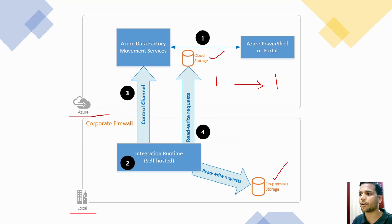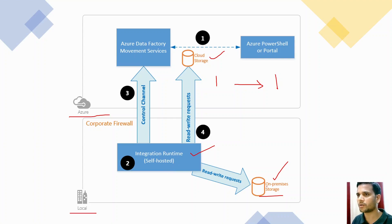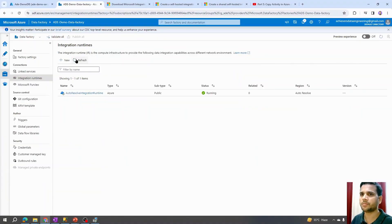However, when copying data from an on-prem solution and pushing it to the cloud, we need to understand the security and take care of data encryption when transferring data from on-prem over the internet to Azure. In that scenario we need a self-hosted integration runtime that we install on a local server within the same network as the on-prem solution. This self-hosted integration runtime takes care of all the compute infrastructure and performs the data movement in an encrypted manner so that data security is protected.